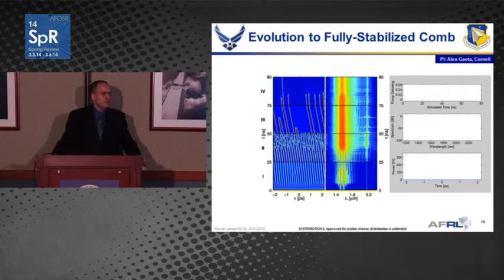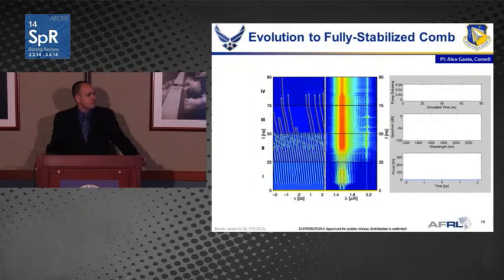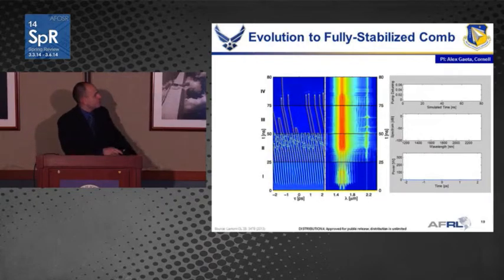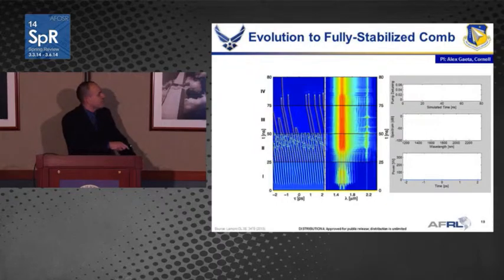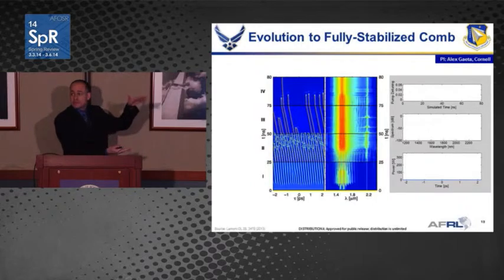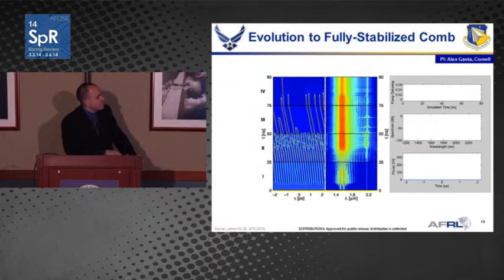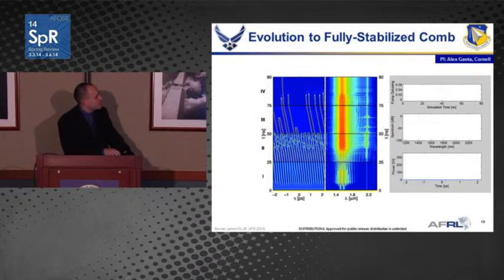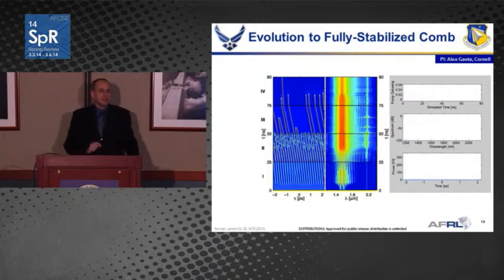The Lugiato-Lefever model has the added advantage of reducing computational time by a factor of 10,000, so you can run simulations looking at the full spatial-temporal dynamics of the comb lines essentially in 30 seconds on a laptop computer. I'm going to show a movie that Alex put together. On the left blue panel, you'll see temporal evolution going vertically — the power inside the cavity over one round trip. On the right side, you'll see the evolution of the spectrum in time. The top panel shows a laser parameter we're going to change — the laser detuning — at three times: 25, 50, and 75 nanoseconds.